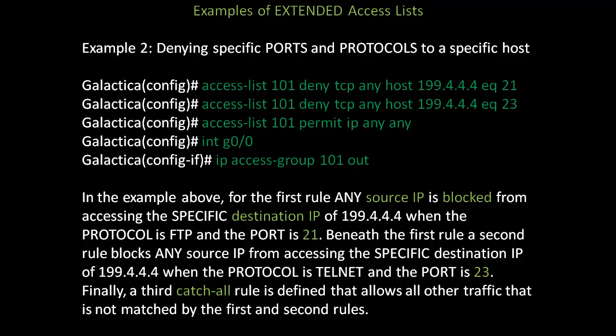In the example above, any source IP is blocked from accessing destination IP 199.444 when the protocol is FTP and the port is 21. Beneath the first rule, a second rule blocks any source IP from accessing 199.444 when the protocol is Telnet and the port is 23. Finally, a third catch-all rule is defined that allows all other traffic not matched by the first and second rules.